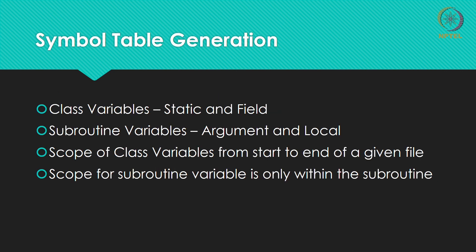When we look at symbol table generation, there are two types of variables we need to handle. There are class variables — basically static and field — two kinds of class variables. And there are subroutine variables: inside every subroutine there will be arguments and local variables. The scope of class variables spans the entire file, while the scope of subroutine variables is limited within that subroutine.